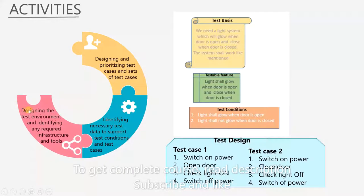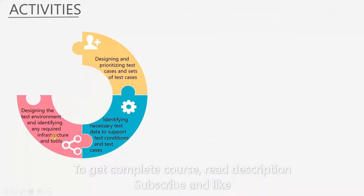The third point is designing the test environment and identifying any required infrastructure and tools. So in other words, to perform these test cases, we need some infrastructure. Switch on power. So we need a power supply. We need a battery or a programmable power supply. We also need a door to open or close, and a light. Depending on the type of testing you are doing, you might need different supplies and tools, or at least a simulation of these things. That's why you need to figure out the infrastructure in the design phase.